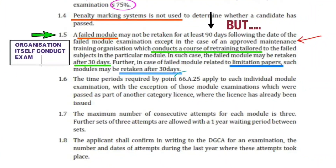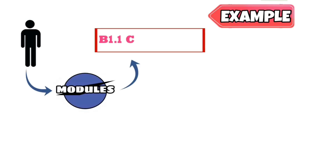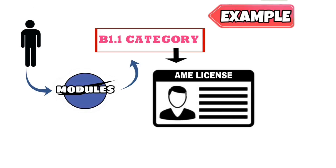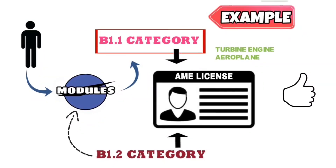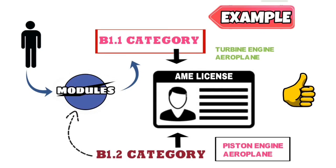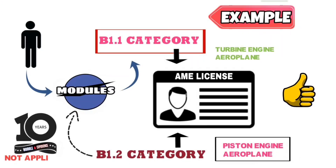As mentioned in CAR 66A.25, the total time duration within which you need to clear all your modules is 10 years. However, there are some exceptions. For example, a person who has passed all modules for B1.1 and holds a B1.1 license, if they want to endorse B1.2 in their license, they need to clear some additional modules — such as piston engine modules and relevant airframe modules. In this situation, the 10-year time duration is not applicable.